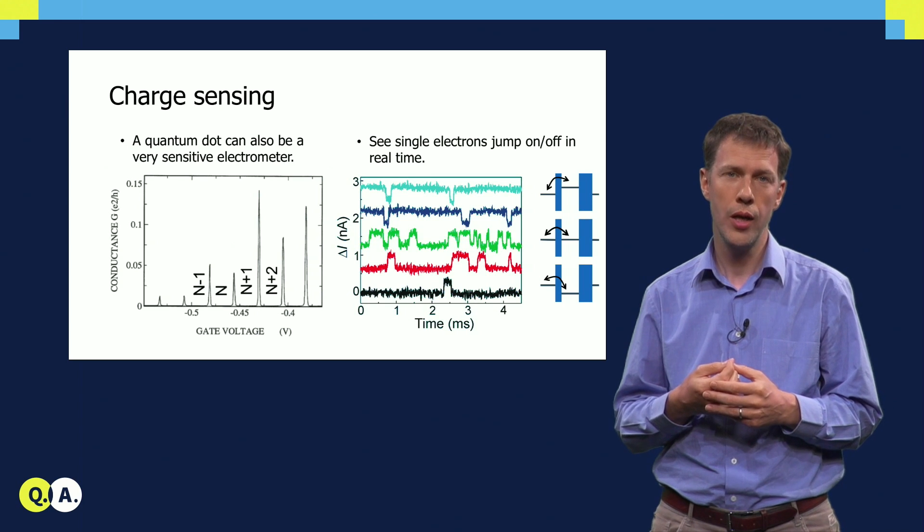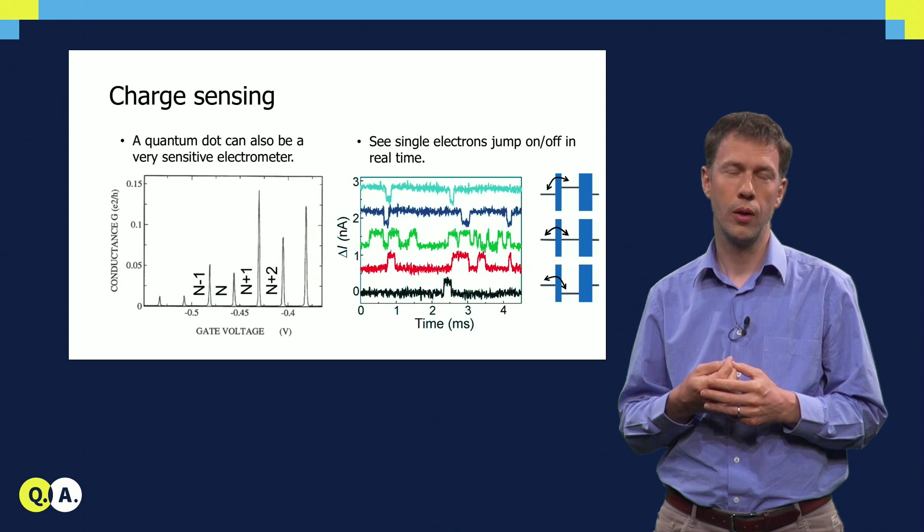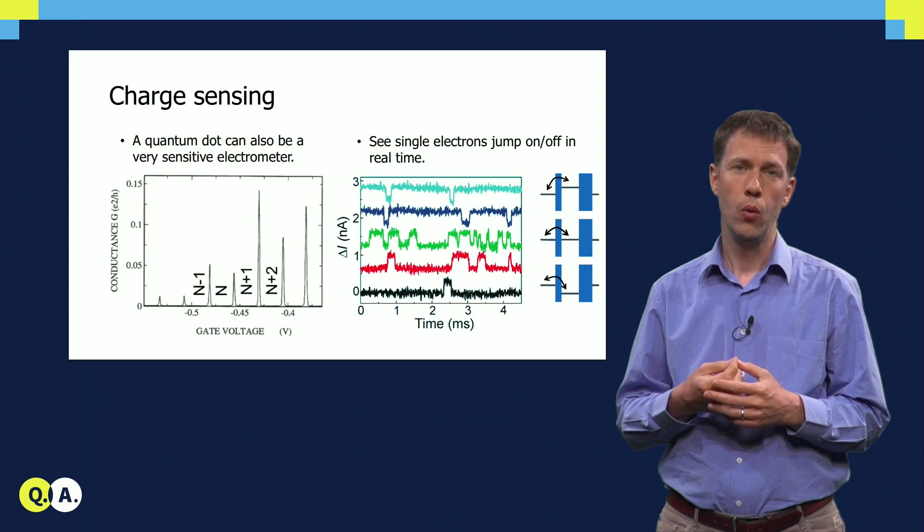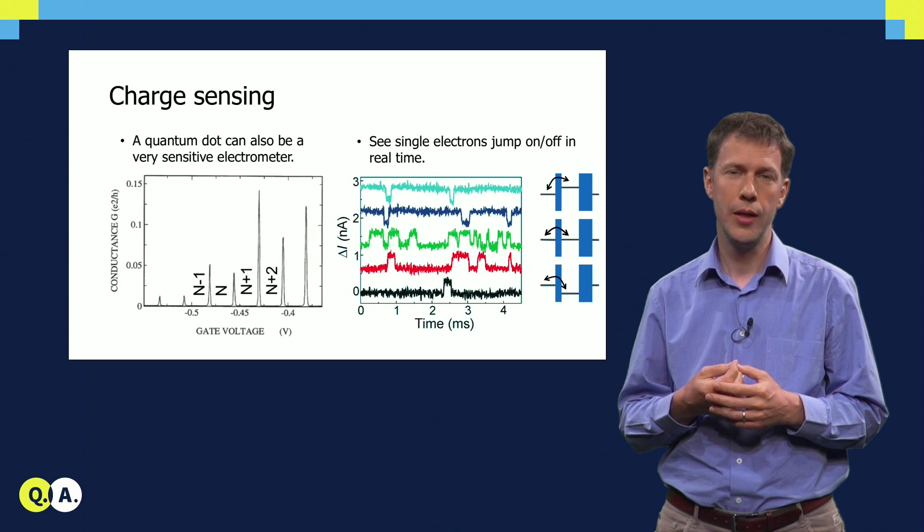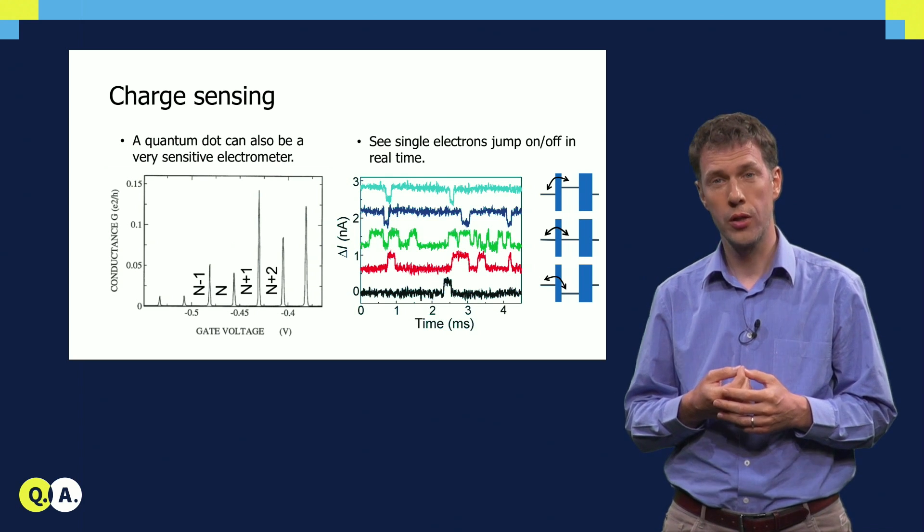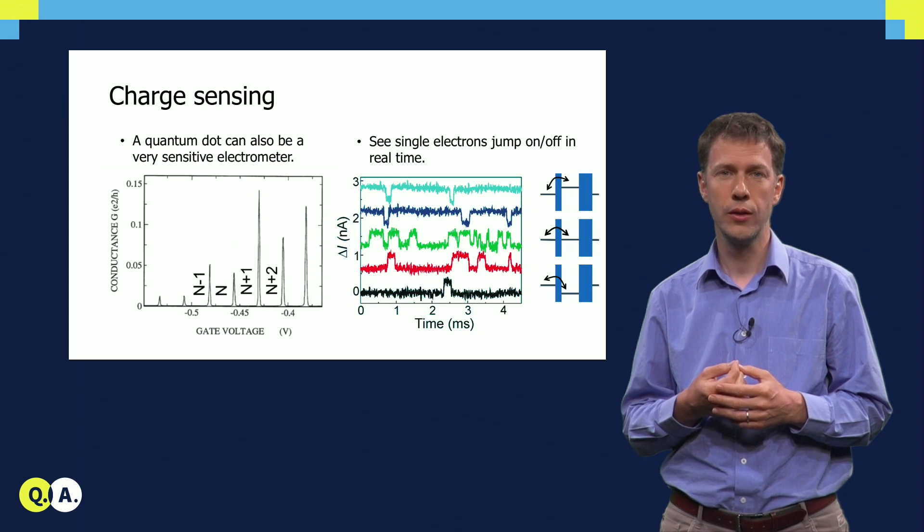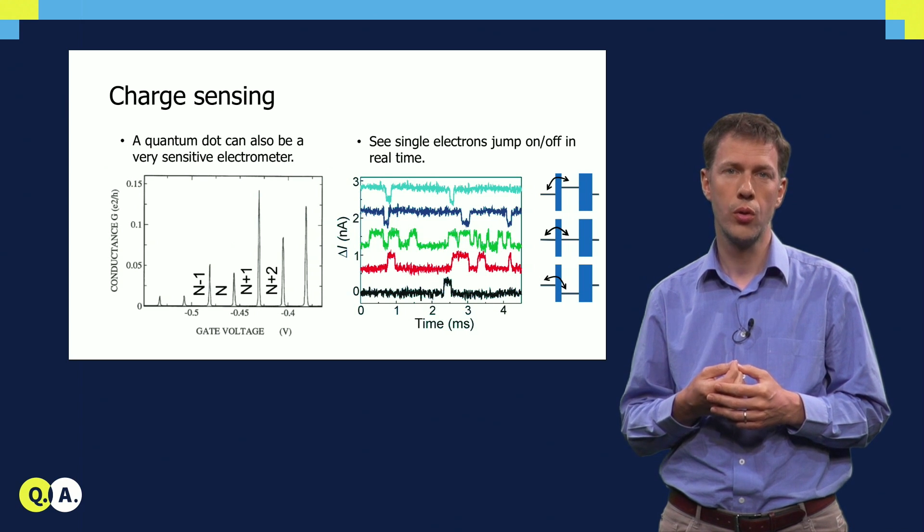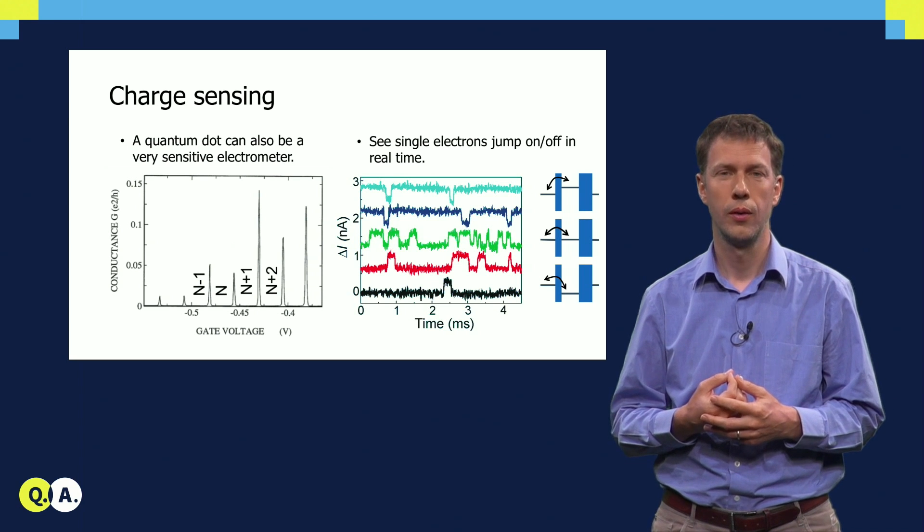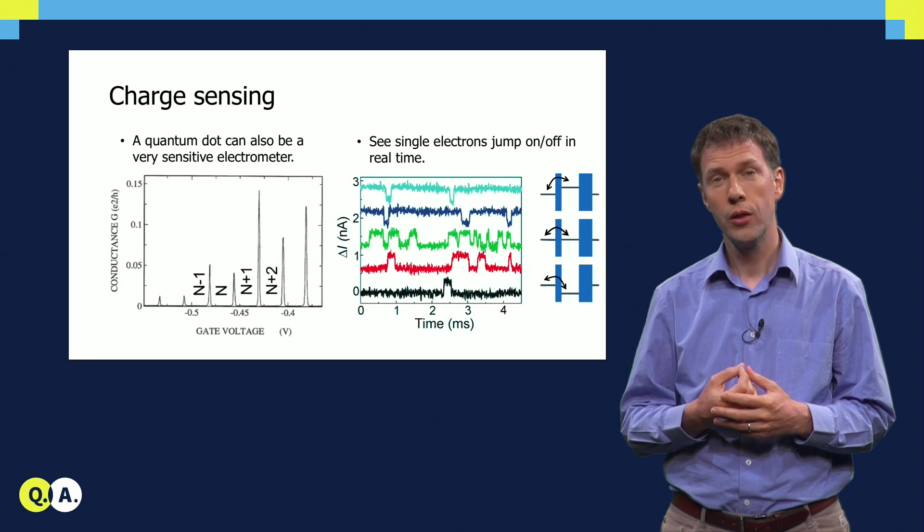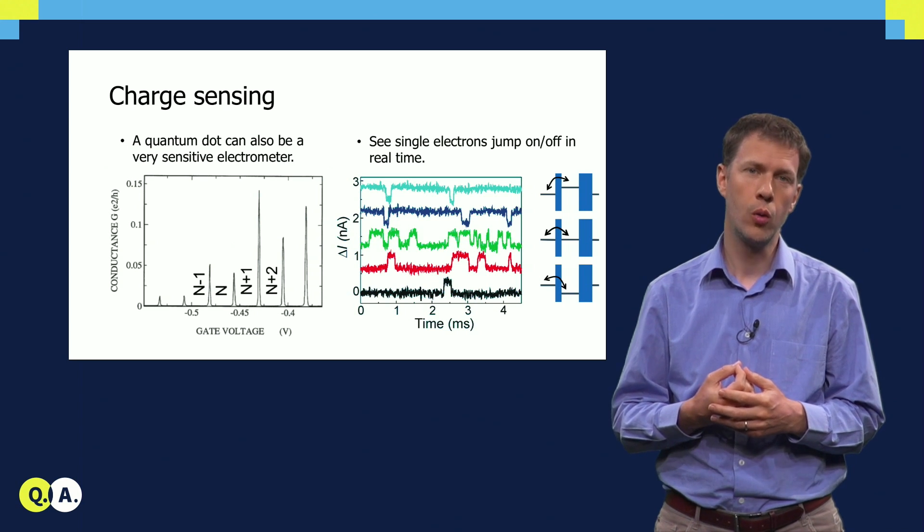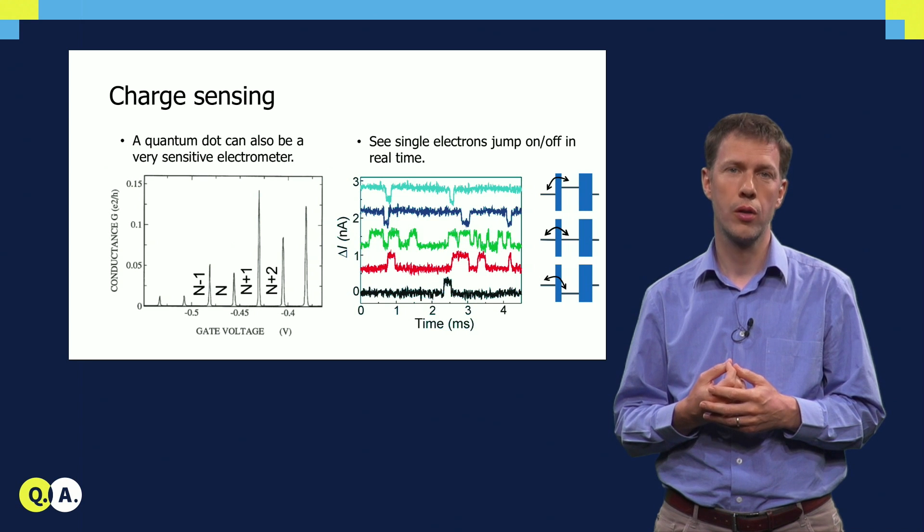With a small change in gate voltage, we can produce a large current, or completely shut off the current. Now imagine a second quantum dot is placed next to the first. It turns out that a single charge added to the second quantum dot acts like a small shifting gate voltage through capacitive coupling. It shifts the position of the levels in the first quantum dot. So when a single charge is added to one quantum dot, the current through a neighboring quantum dot is changed in a measurable way.